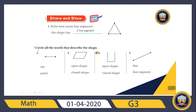Let's circle all the words that describe the shape. What does this shape describe — is it right, is it a point? Of course it has a point, but the line which has a point on one side and continues on the other side — we say it's a ray. That's right.